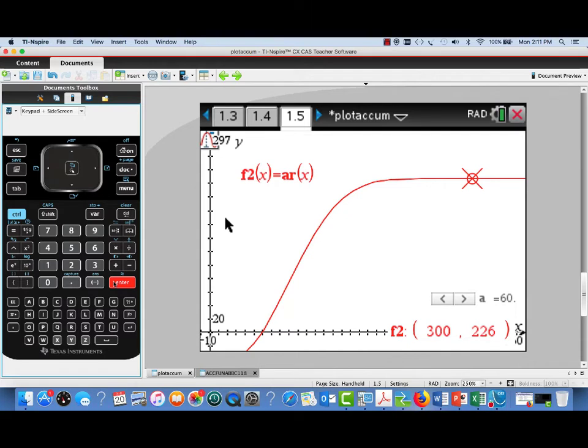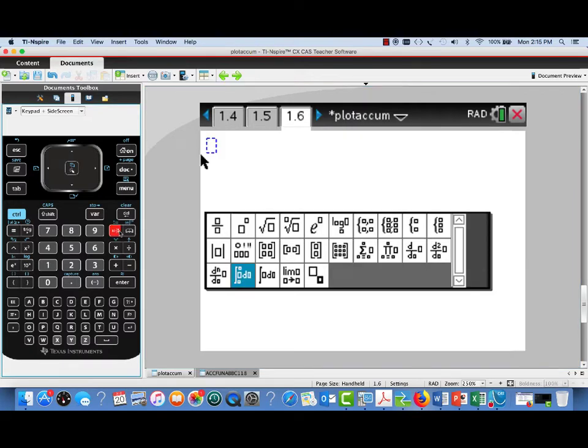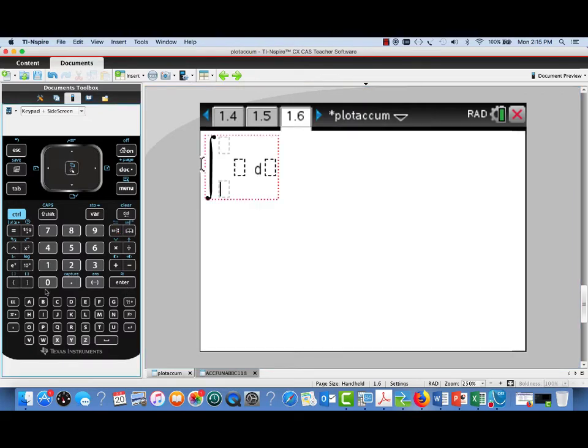Now, if I trace, I can see that at X equals 300, there's 226 people who've entered the line. Now, that's about 44 less people than the 270 we got for our first answer. Let's do a little check here.